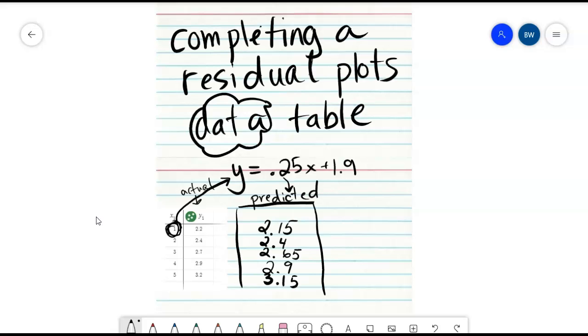In the last step card we saw that residuals were found by subtracting the predicted from the actual. So this table is set up in a nice way where you can take the actual value minus the predicted value and you will generate the residual values. Go ahead and finish that out for yourself on this step card, or make a note that you are going to do actual minus predicted. And that is how you complete a residual plots data table.